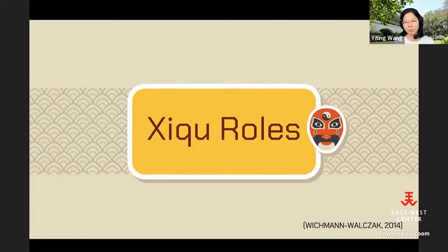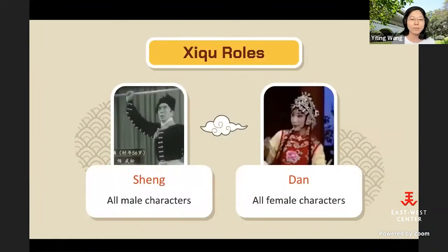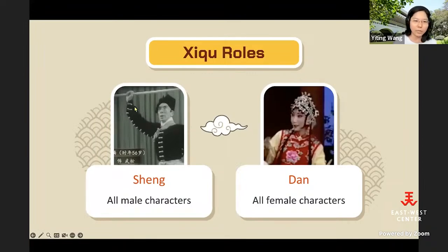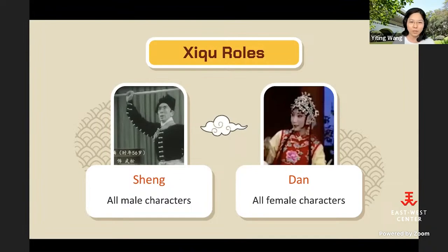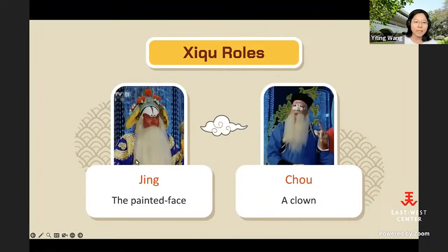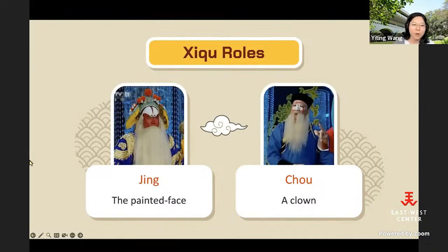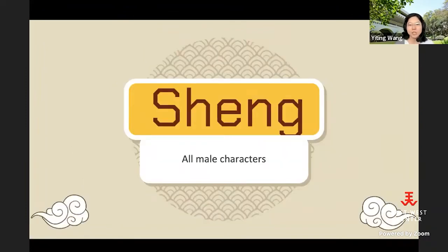The first section is about roles of Xiqu and there are four. The first is sheng, all male characters. The second is dan, female characters. Then we have jing, the painted face, and chou, translated as clown. As you can see here, this performer is doing acrobatics in a show about Wu Song going into the woods to conquer a tiger. I will skip jing for now because I want to discuss it in the painted face section.